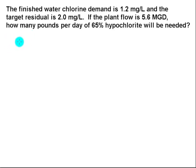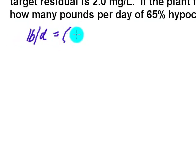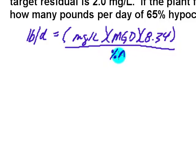I'm going to start by writing down my dose equation. The dose equation, pounds per day, is equal to milligrams per liter times the flow rate in MGD times 8.34 divided by my percent available or my percent pure.